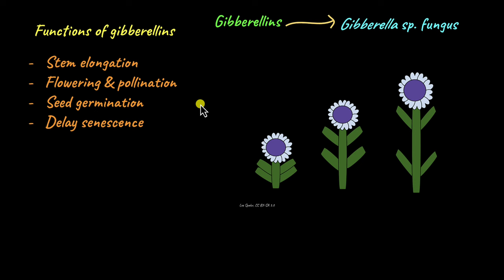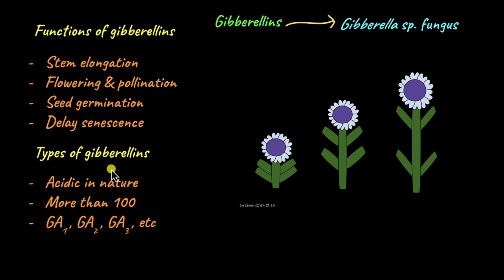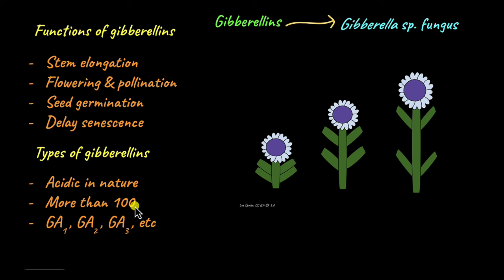Like auxins, there are different types of gibberellins as well. Gibberellins are mainly acidic in nature, so they are named gibberellic acid 1, gibberellic acid 2, etc. So far more than 100 gibberellins have been discovered, making gibberellins one of the most widely studied plant hormones.